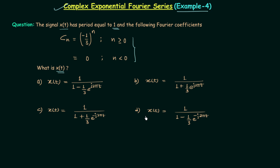There are four options and in all four options you can see a series is not present. So it is very clear that we are not required to find the complex exponential Fourier series using the coefficients given in the problem. We are required to find the original signal X(t), not the expansion.